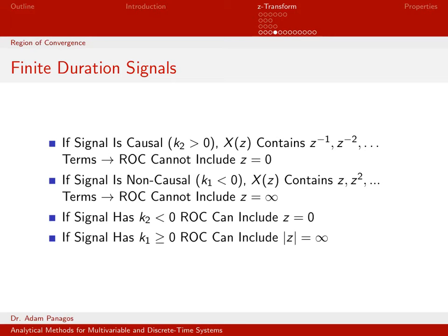What if X of K exists for negative times — if K1 is less than 0? Going back to the Z-transform definition, I might have a term for K equals negative 1: X at time negative 1 times Z, X at time negative 2 times Z squared, X at time minus 3 times Z cubed, and so on. If my signal exists for negative time, I have Zs raised to positive powers, so my region of convergence can't include Z equals infinity.